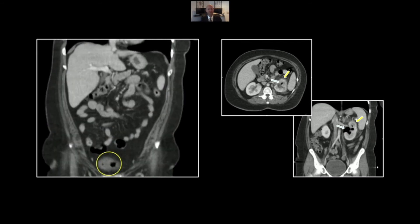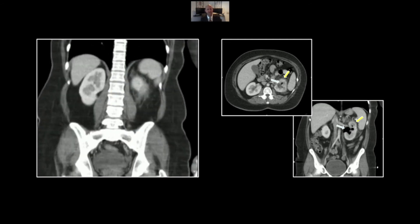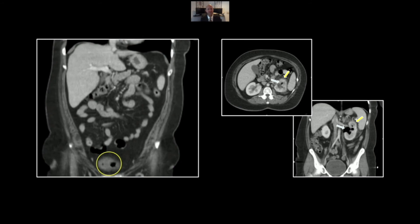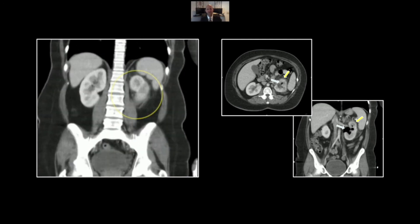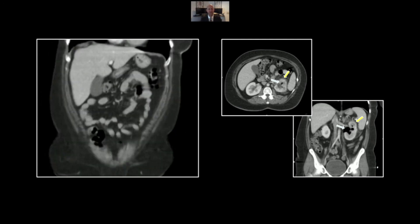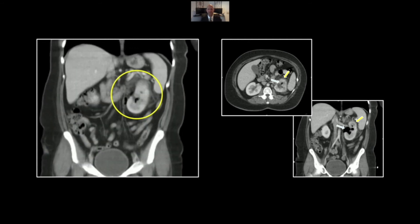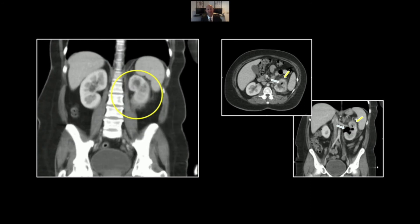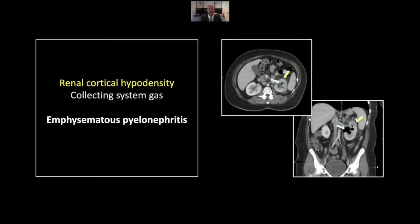On the coronals, you can also appreciate a little gas within the bladder, a common finding associated with emphysematous pyelonephritis. Isolated gas within the bladder — emphysematous cystitis — is less concerning, more easily survived, and not restricted to the diabetic patient population. But in this setting with emphysematous pyelonephritis, that is clearly not the primary pathology. That is a case of emphysematous pyelonephritis.